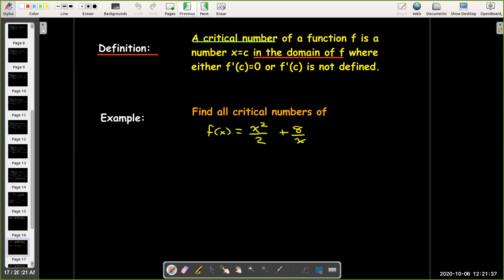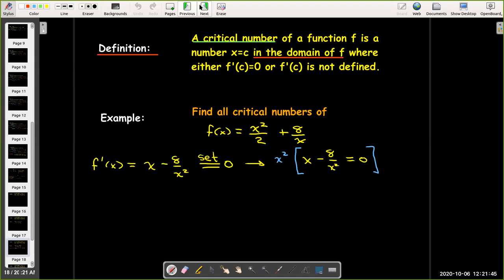Let's finish with an example. Find all critical numbers of f(x) = x²/2 + 8/x. So I find the derivative using the power rule. I'll get x - 8/x². I'll set that equal to 0 to find all numbers where the derivative equals 0. Do some algebra here. I'll multiply both sides by x². I get the equation x³ - 8 = 0. That has the solution x = 2.